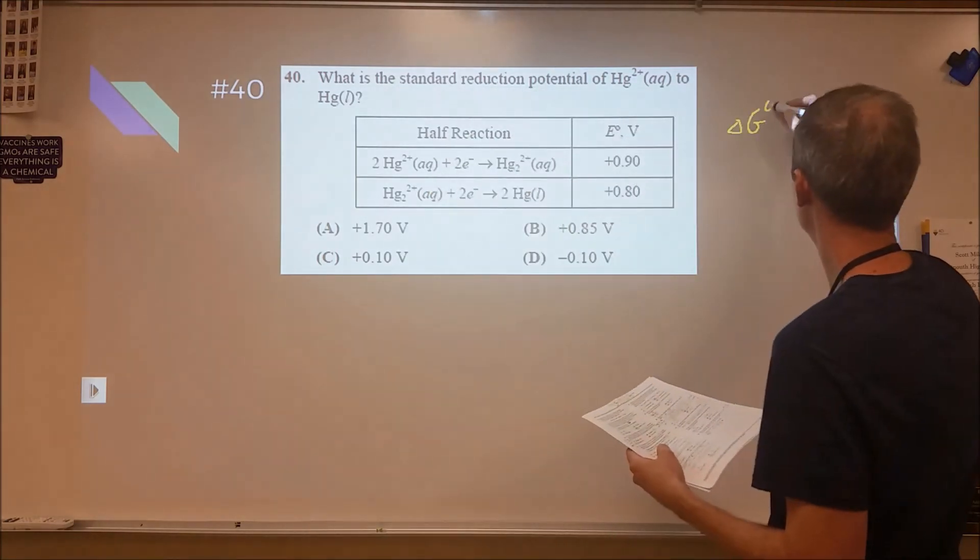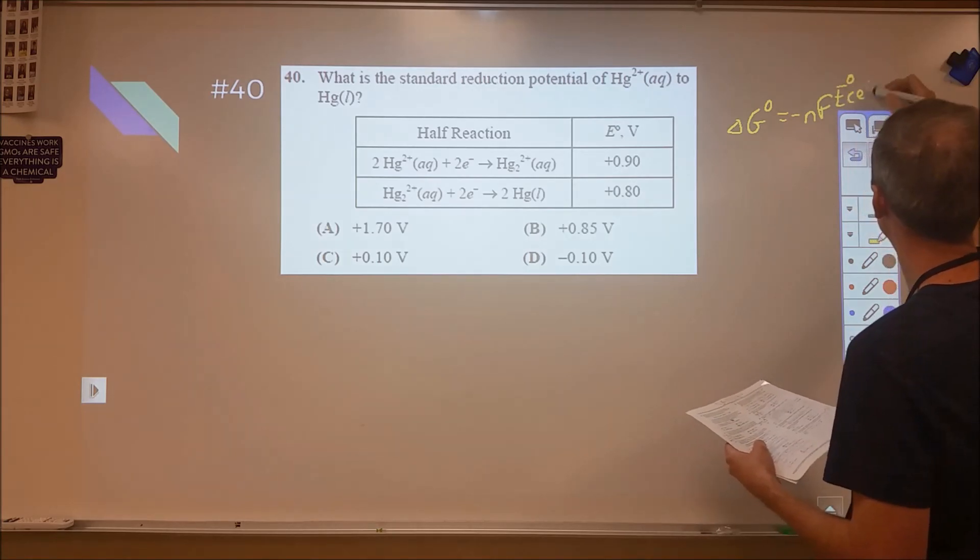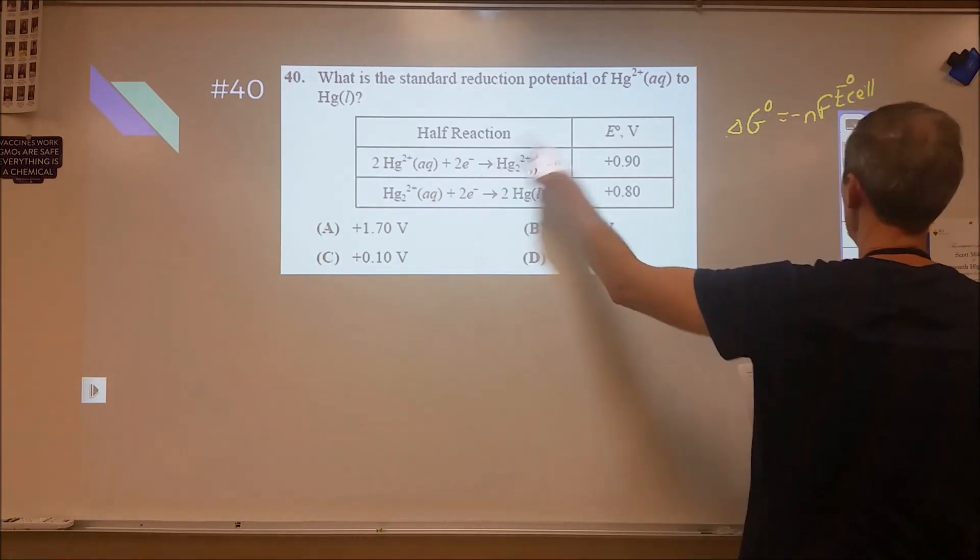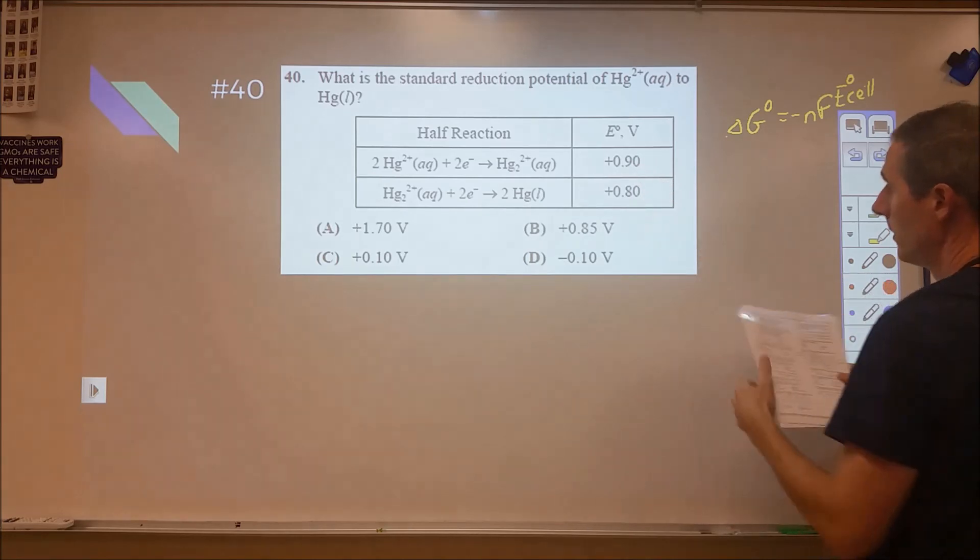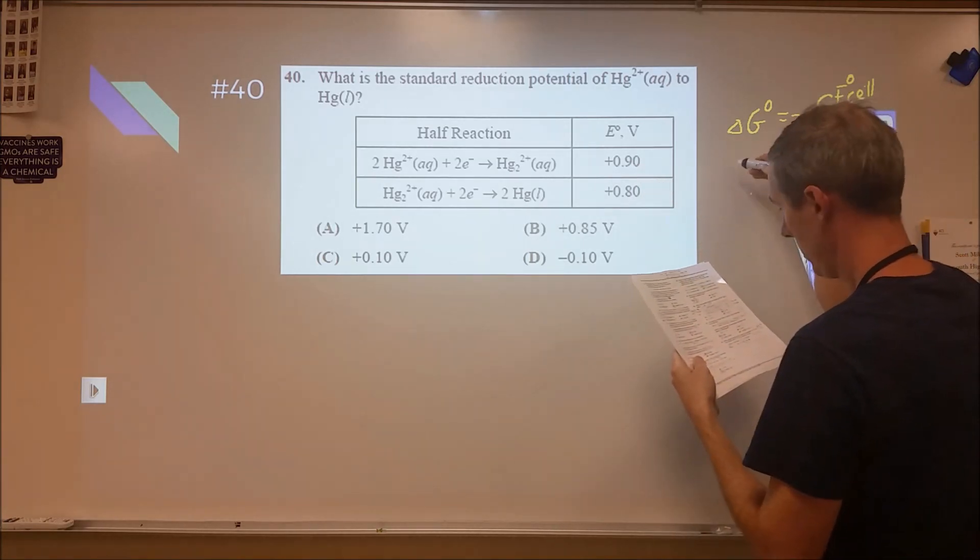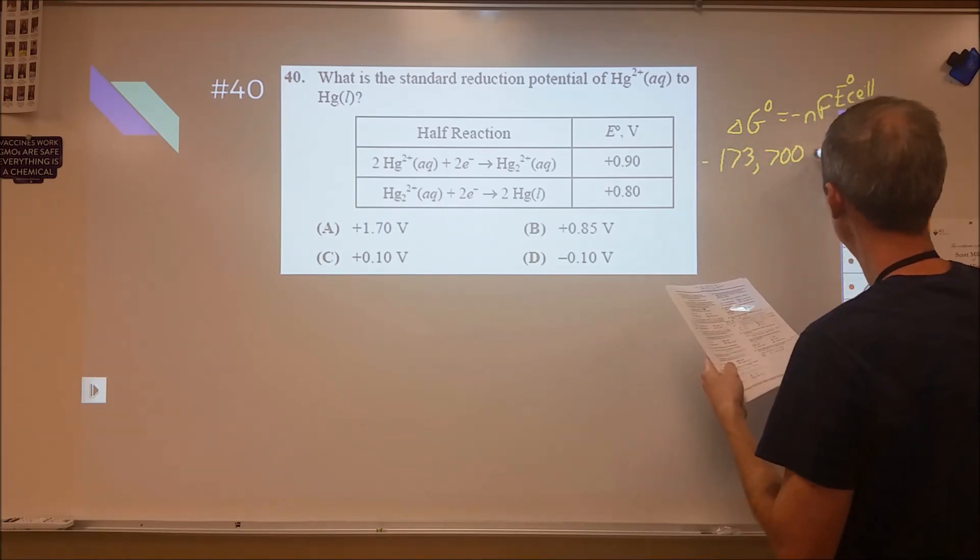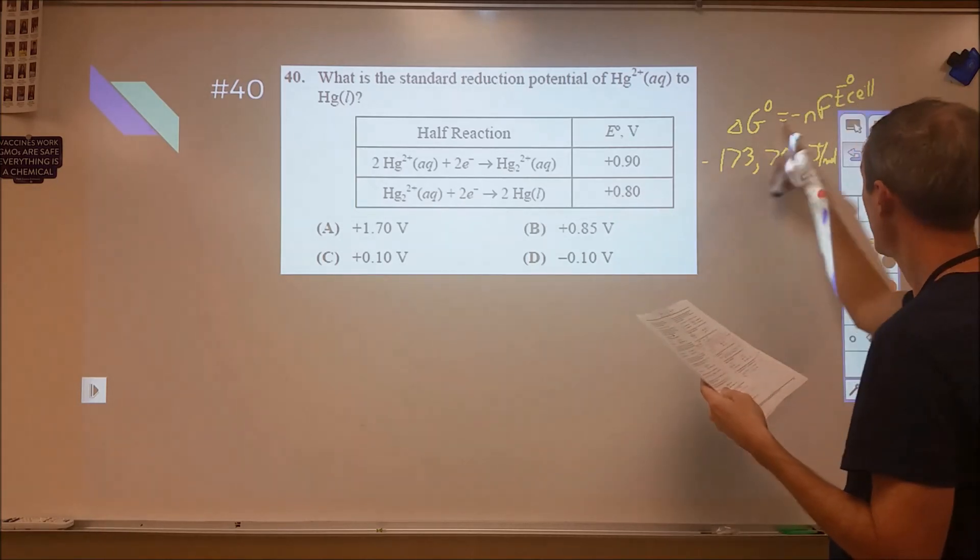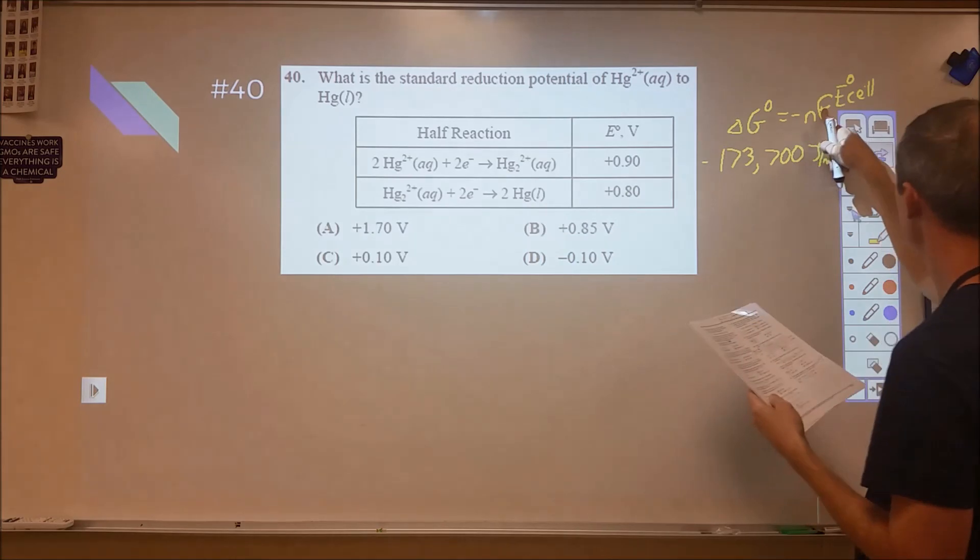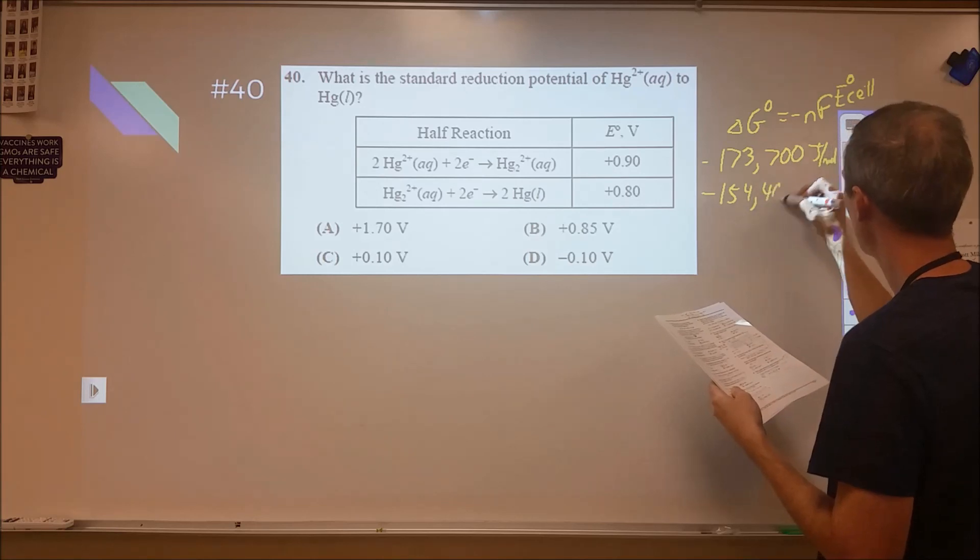For this first reaction there, we know that the Gibbs free energy is equal to negative nFE naught cell. So, we have two for our n. We have 96,500 for our Faraday constant. And our voltage is plus 0.9. So, we're going to end up with a negative Gibbs free energy. So, this top one is negative 173,700, and that is in joules per mole. And then the second one, same equation, still two electrons, 96,500, but now it's 0.8. So, it's going to be slightly different. This is negative 154,400 joules per mole.